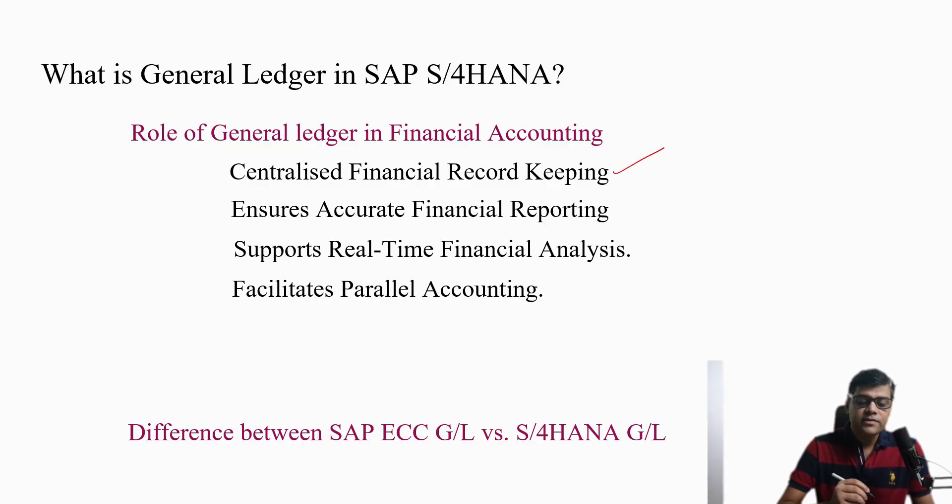One of our important business processes is record to report, and in record to report we are doing multiple activities. A very important aspect of record to report is your general ledger accounting, and when we are using this in S4 HANA we are saying GL on S4 HANA or general ledger on your financial accounting. The first point is it is going to help us centralize financial recording. The general ledger is our master record, like other master records such as customer and vendor, but those are known as your sub-ledgers. General ledger is our master record and it helps for financial transaction purposes.